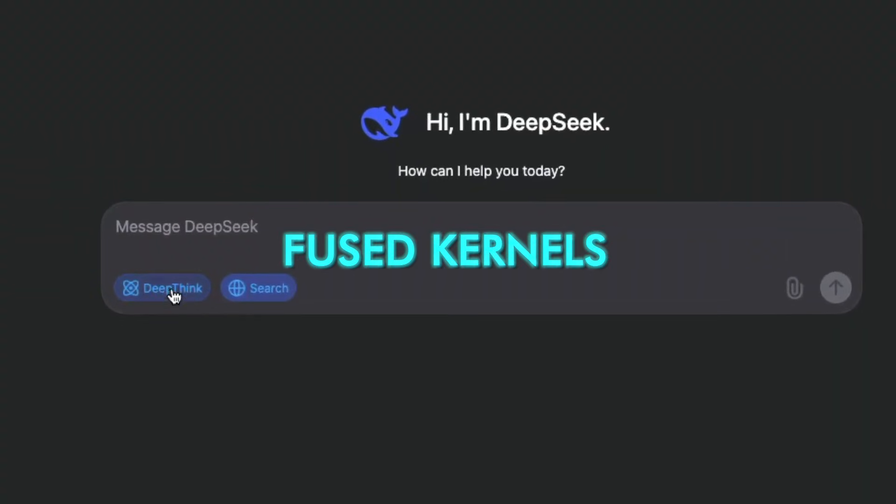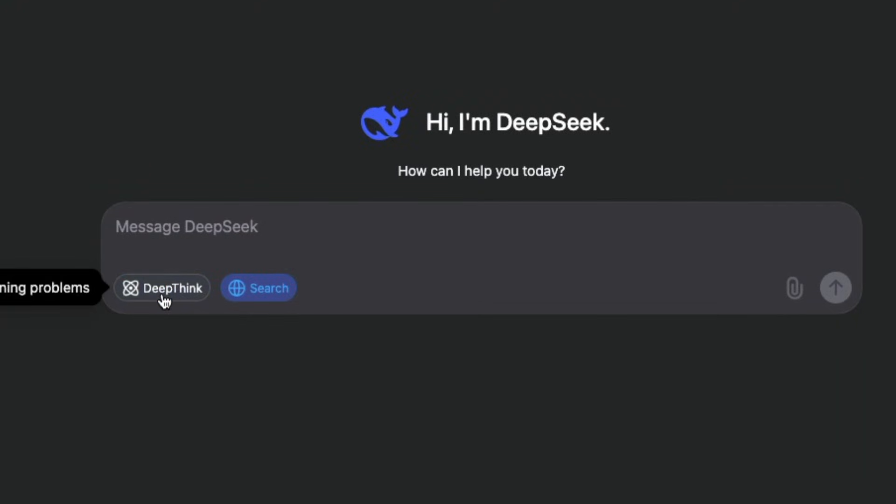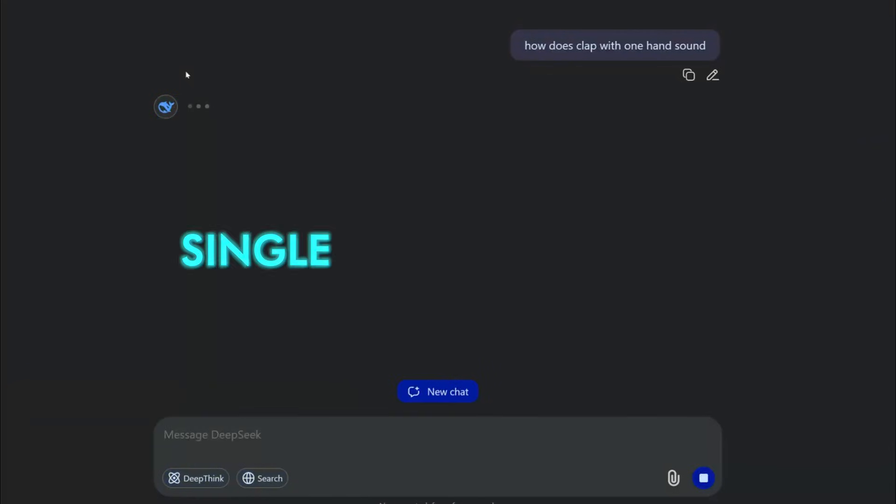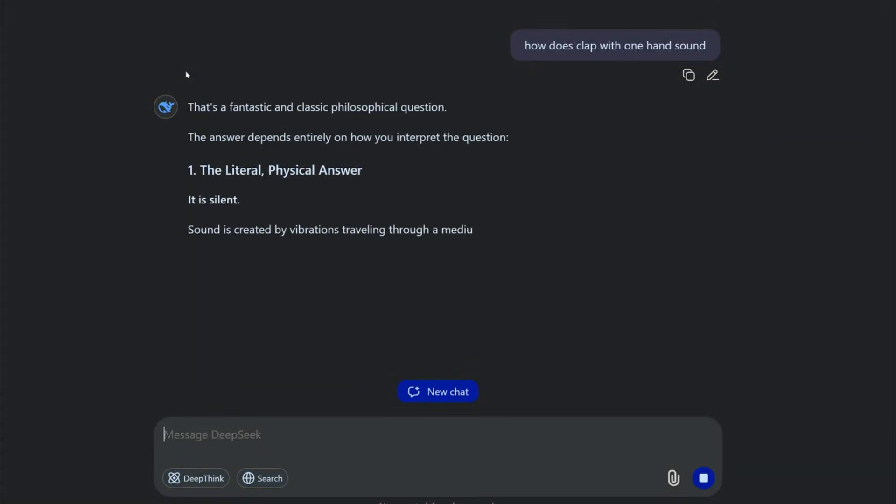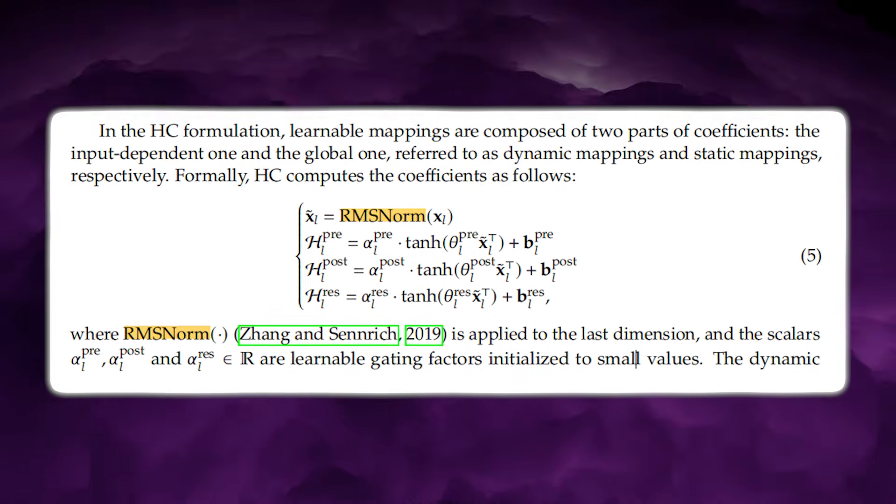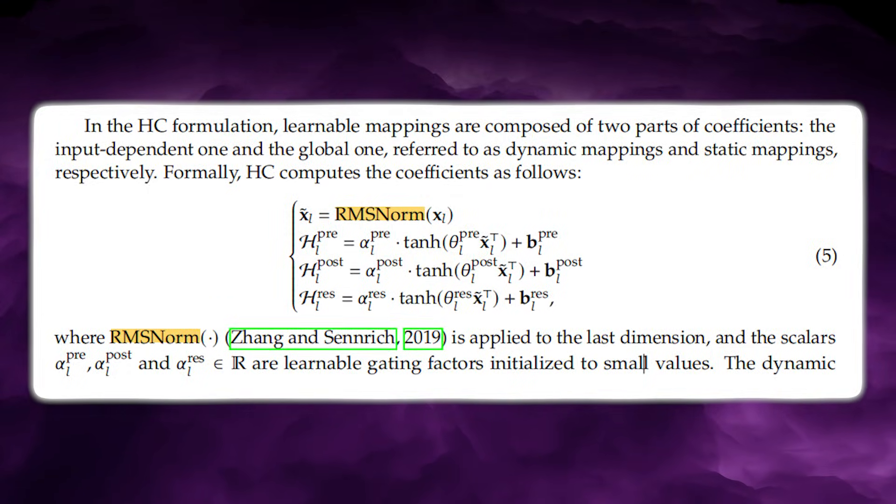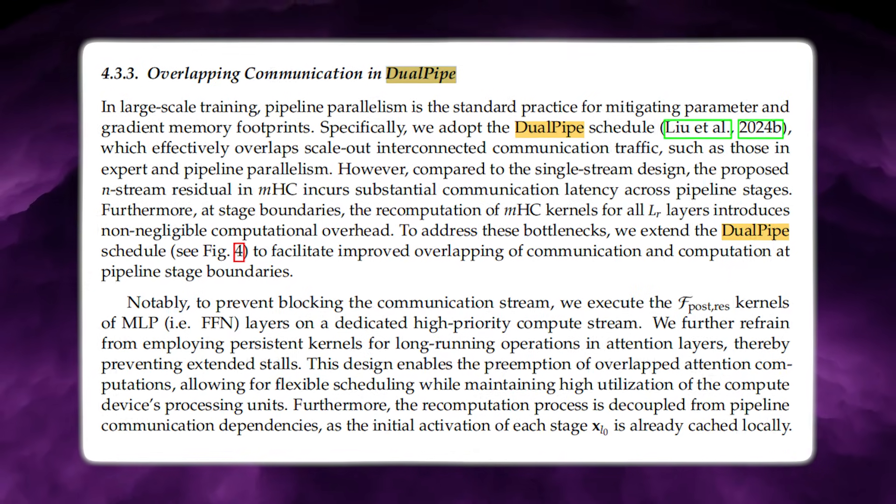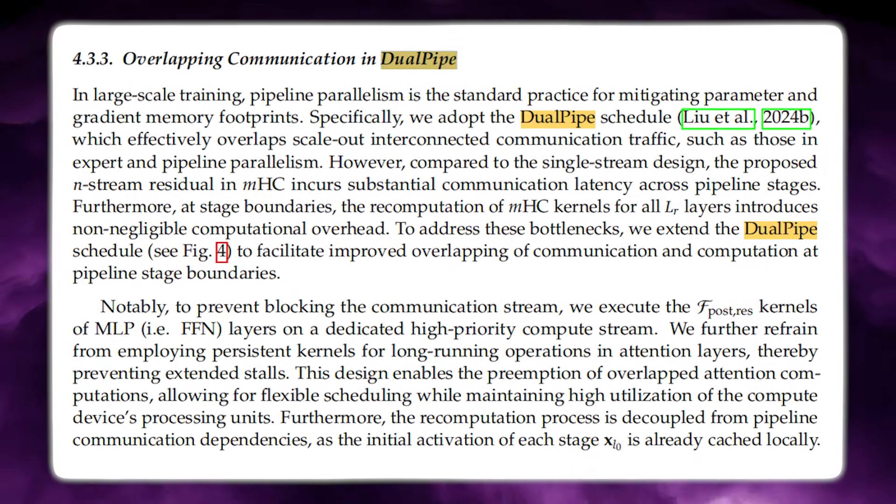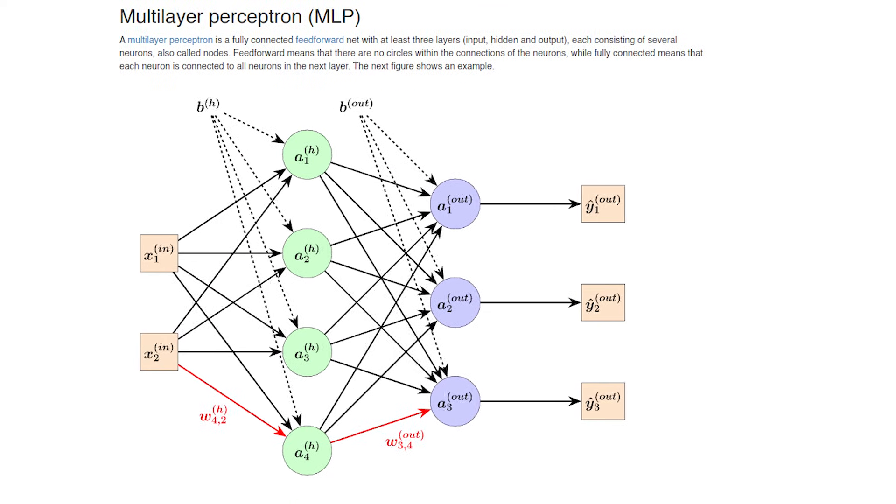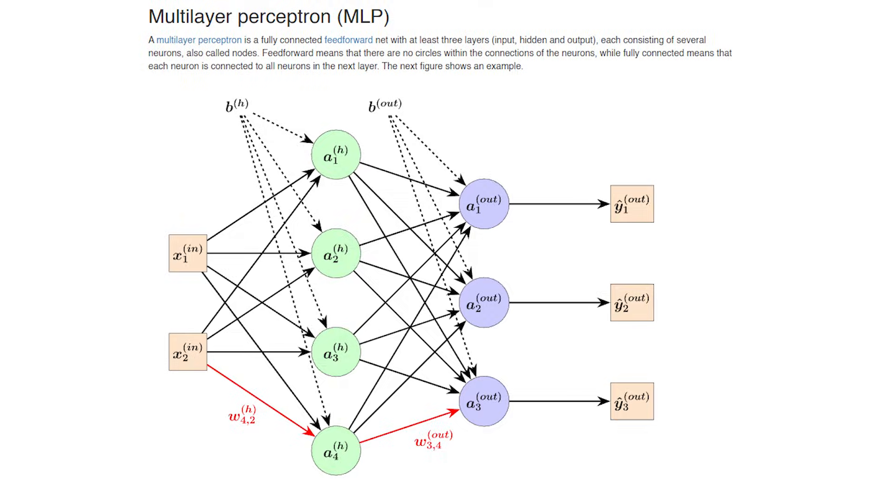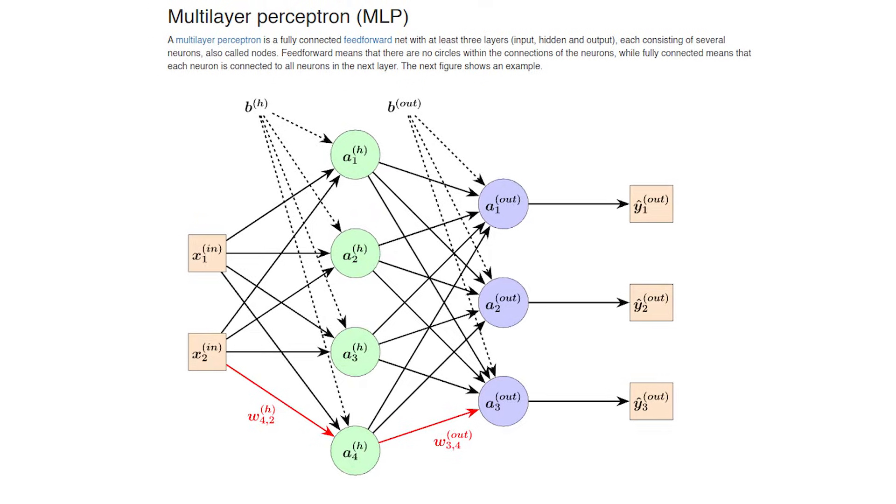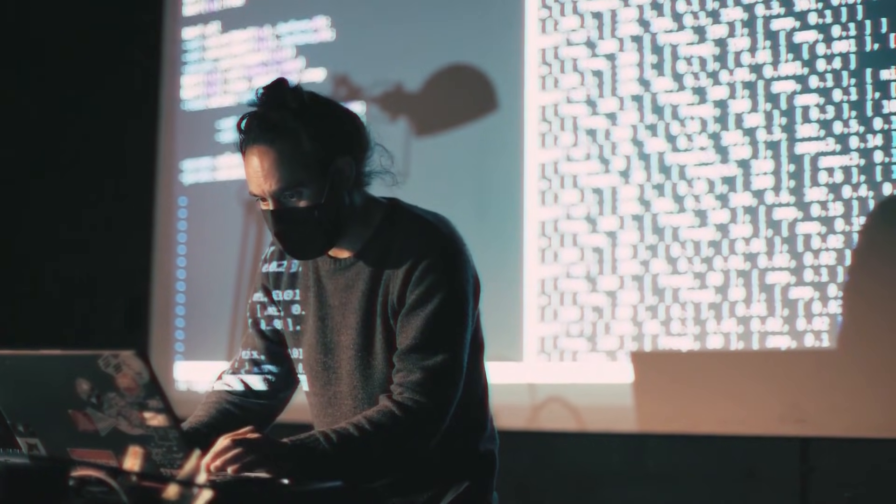DeepSeek avoids this by building fused kernels. They fuse the dynamic mappings and normalization steps into a single tile-lang kernel so GPU memory reloads don't stall throughput. They absorb RMS norm weights into the projection matrix to cut another memory pass. They recompute parts of activations during the backward pass instead of storing them. Dual-pipe pipeline scheduling is modified so that communication overlaps with compute. MLP boundary kernels are assigned to a high-priority compute stream so pipeline idle bubbles shrink. This is systems engineering layered over architecture, making the method trainable without a speed penalty.